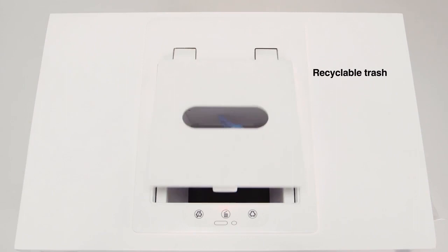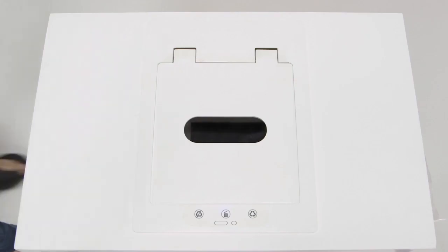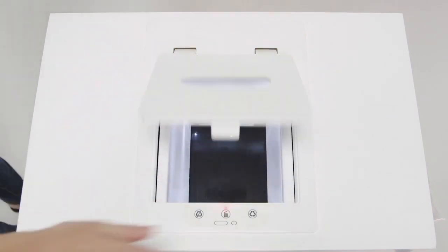If it's recyclable, Oscar will roll it to the right. If it's not, Oscar will unload it to the left. Simple, right?